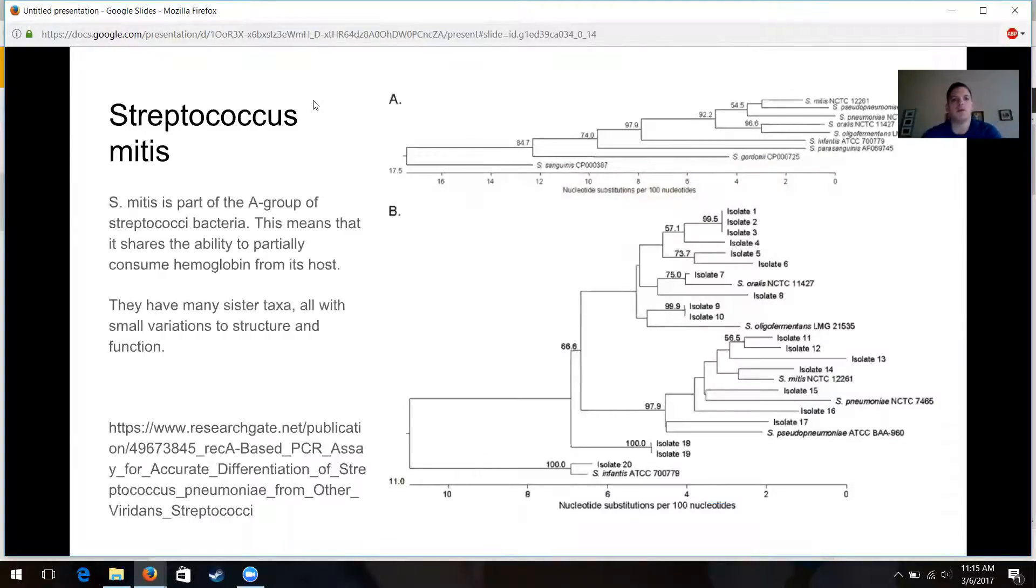Here is the phylogenetic breakdown for Streptococcus mitus. The phylogeny is broken up into A and B groups. Streptococcus mitus bacteria are in the A group. And the distinction between these two groups is one has the ability to partially break down the alpha hemoglobin of its host, and the B group has the complete ability to break down alpha hemoglobin.